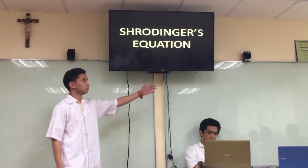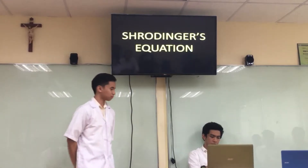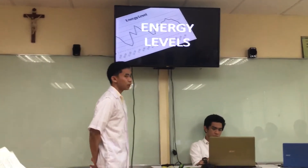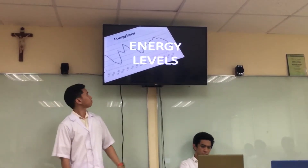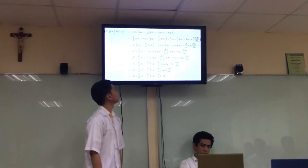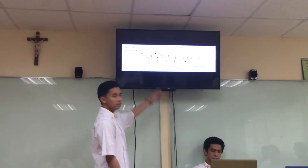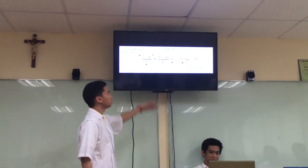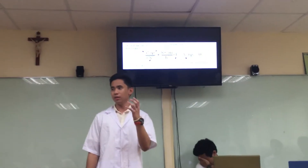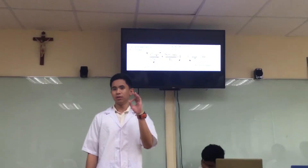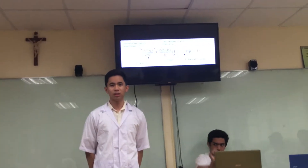Next thing is the Schrödinger's Equation. It's all about the energy levels. And in this equation, we use the wave function in order to locate a particular electron in an orbital.